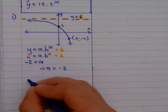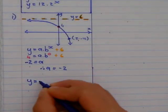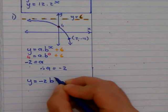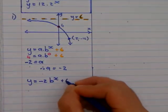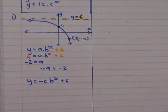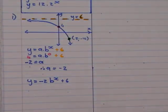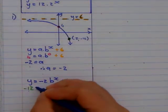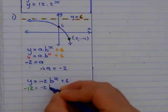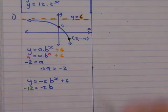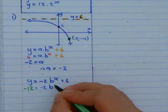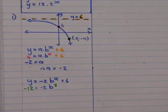Substitute that into my equation. So we're going to have y equals negative 2 times b to the power of x plus 6. Now we substitute in the other point. And the other point is 2 negative 12. So y is negative 12 equals negative 2 times my b. And what's my x value? My x value is 2 plus 6.